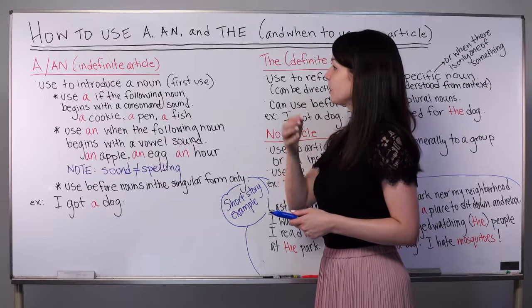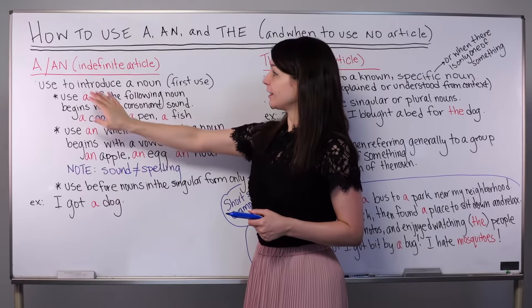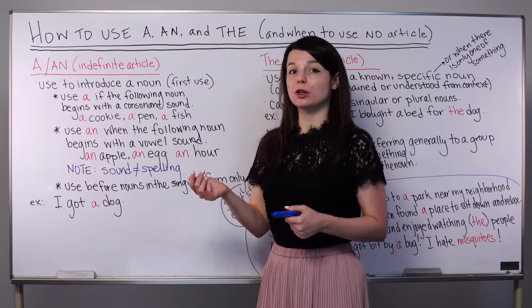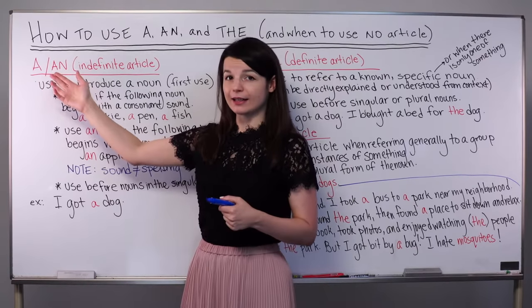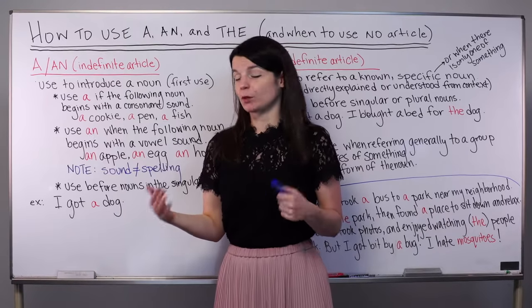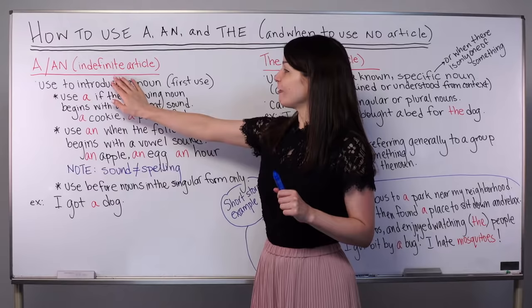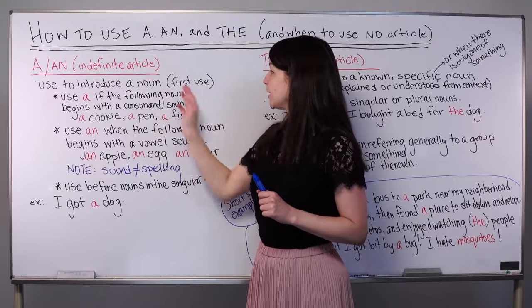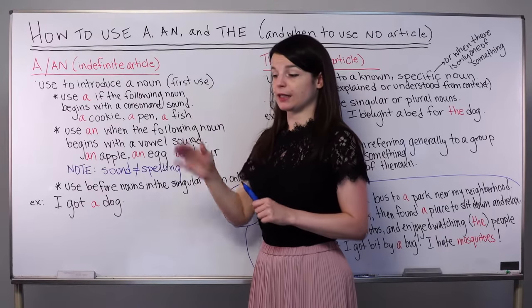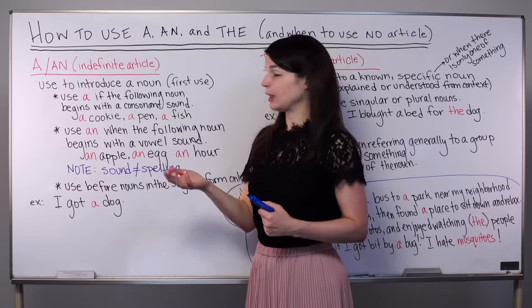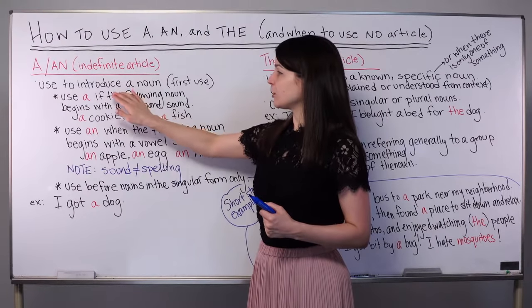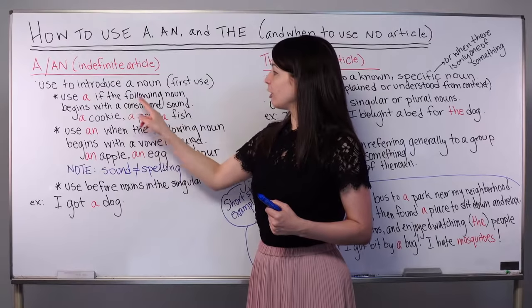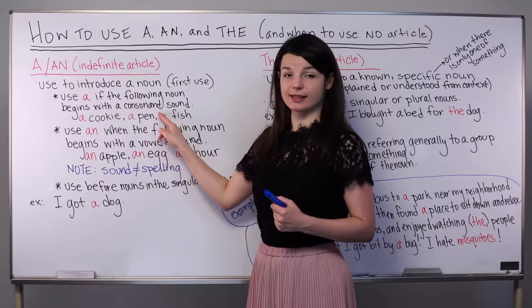First I want to begin by talking about using a and an. These are the indefinite articles that we use in English. Regarding pronunciation, you might hear people use 'a' or 'a' — you can choose whichever you prefer, they're both correct. We use the indefinite article, a or an, when we want to introduce a noun — that means it's our first time using the noun, like when we're telling a story. We use a if the following noun begins with a consonant sound.